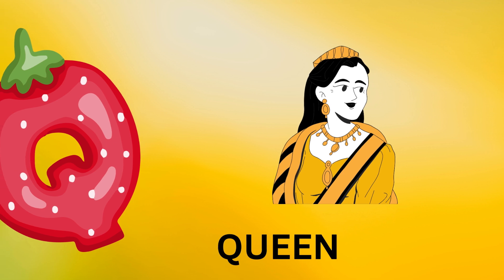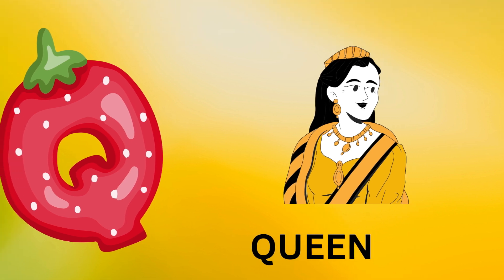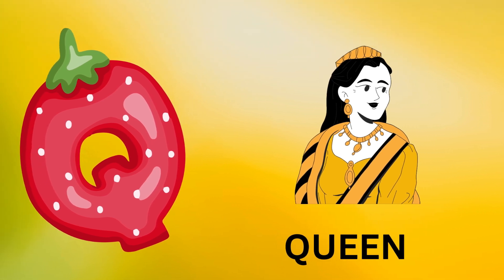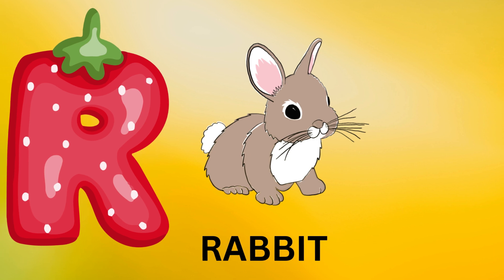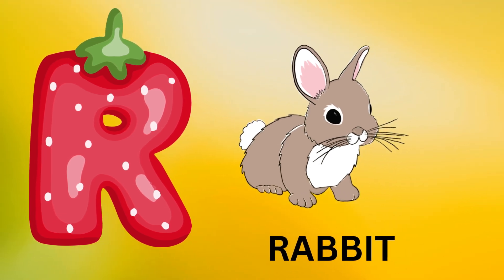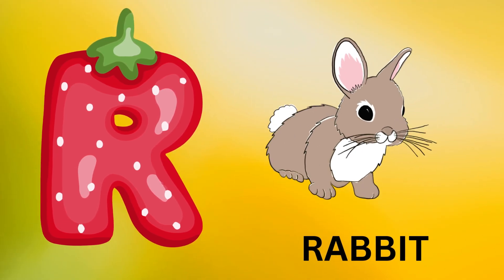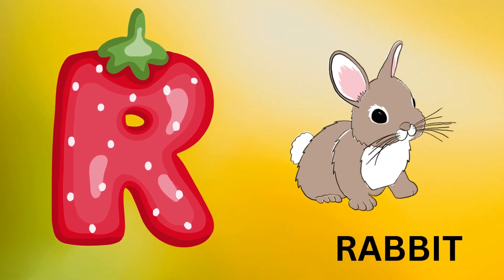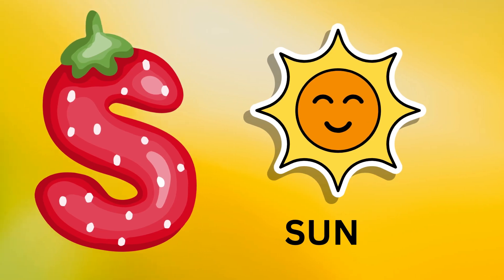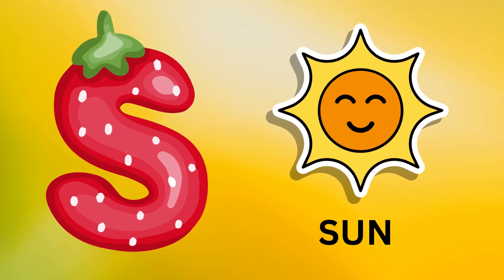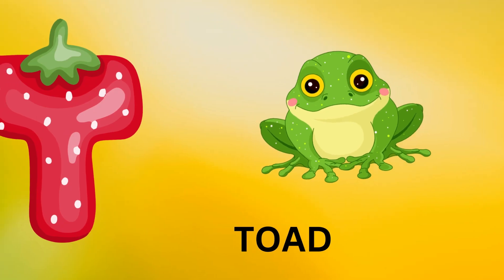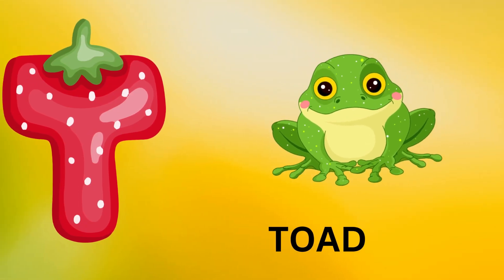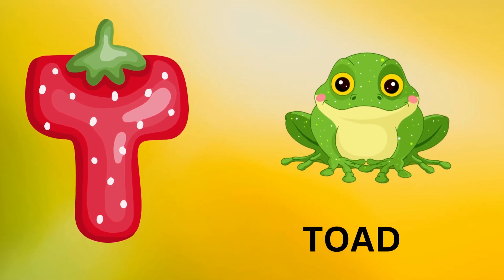Q is for queen, q-q-queen. R is for rabbit, r-r-rabbit. S is for sun, s-s-sun. T is for toad, t-t-toad.